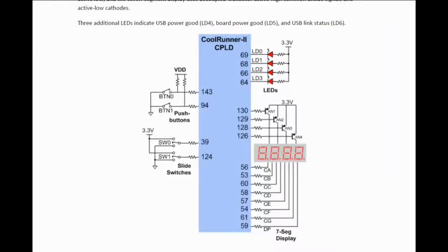Let's check if everything was installed correctly. We will try to make a simple program where a push button will control the state of an LED. Push button number zero will control the state of LED number zero. Here I have a schematic of the inputs and outputs connected to each of the pins of the CPLD. Let's begin our project.